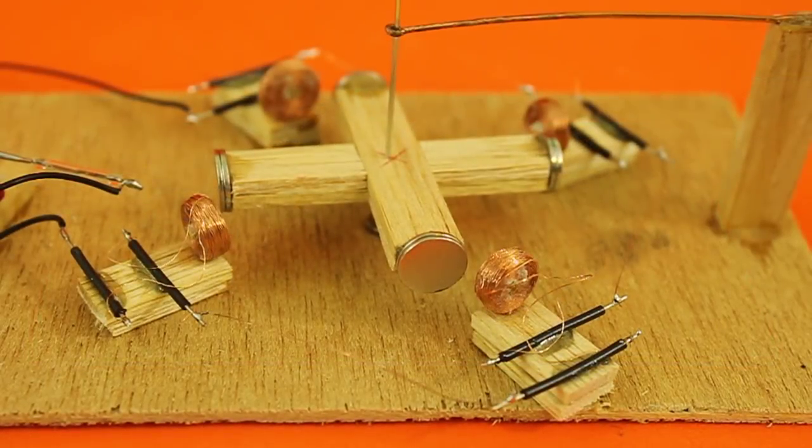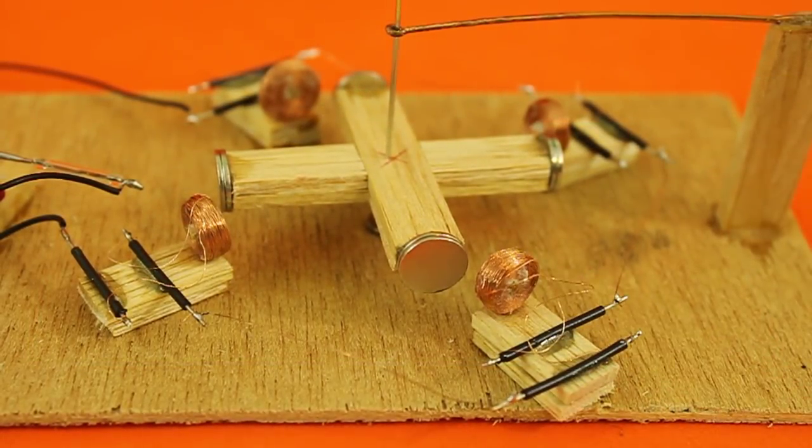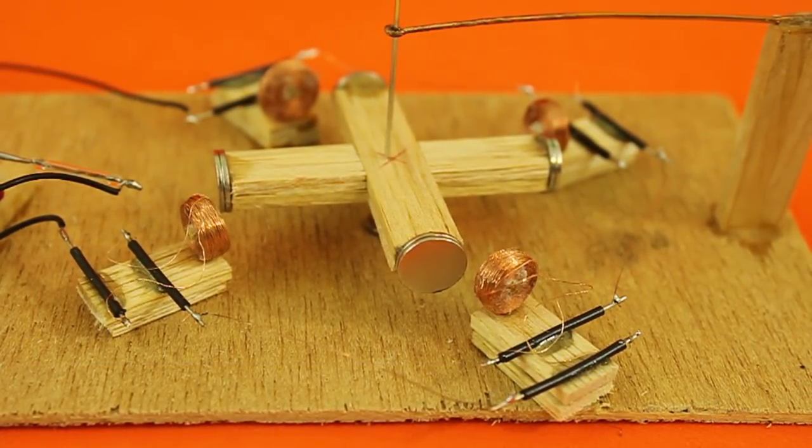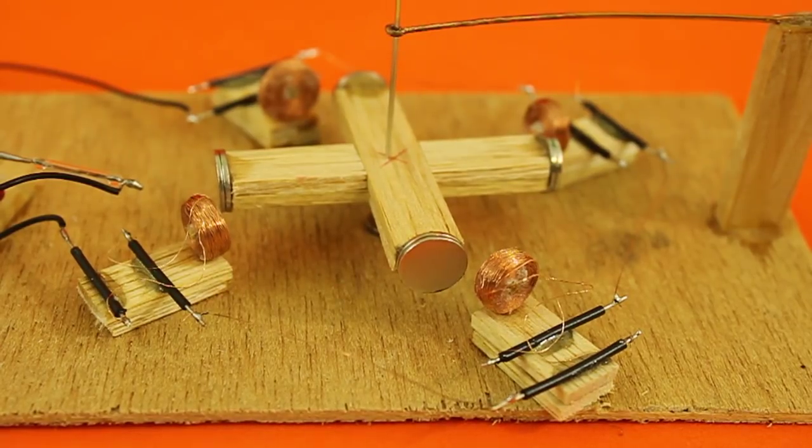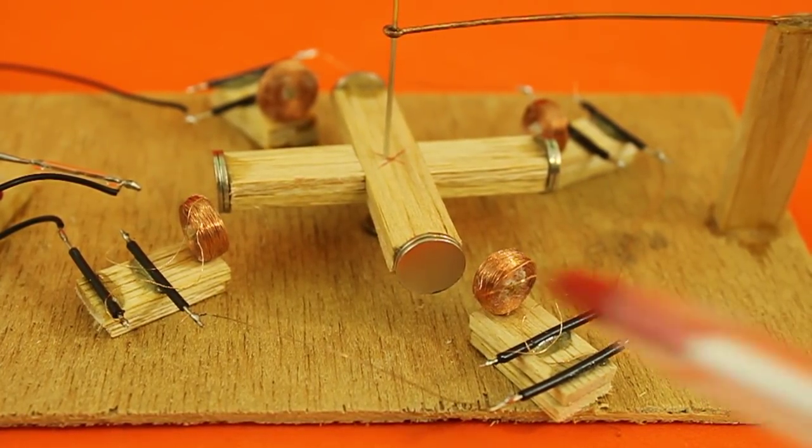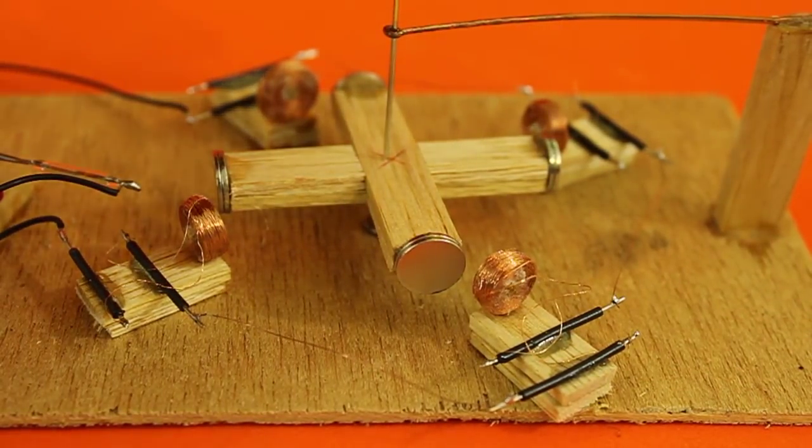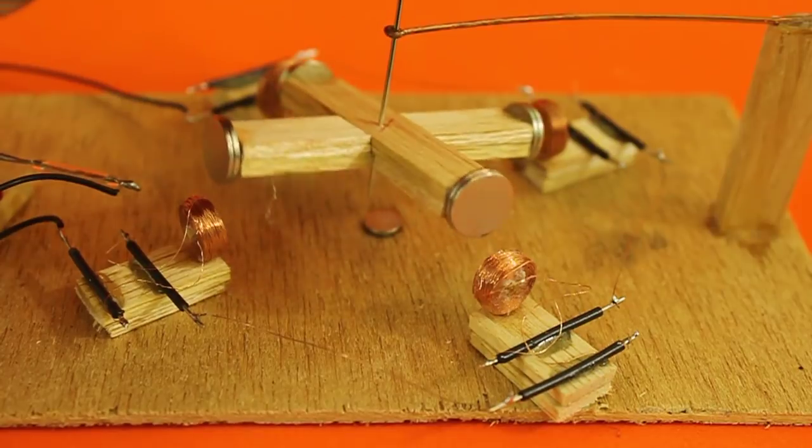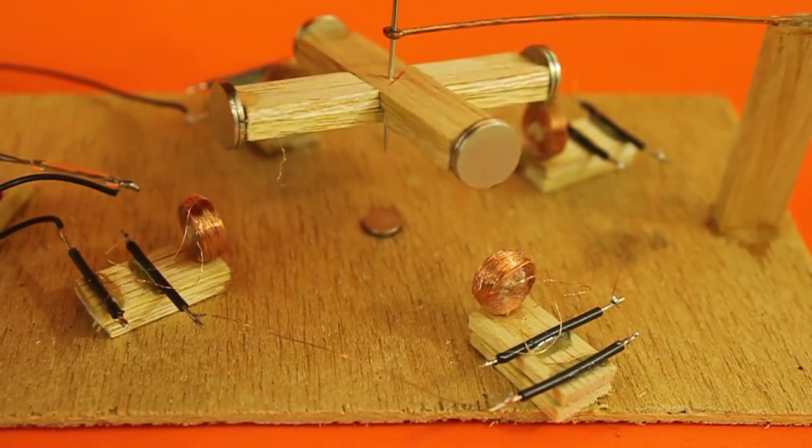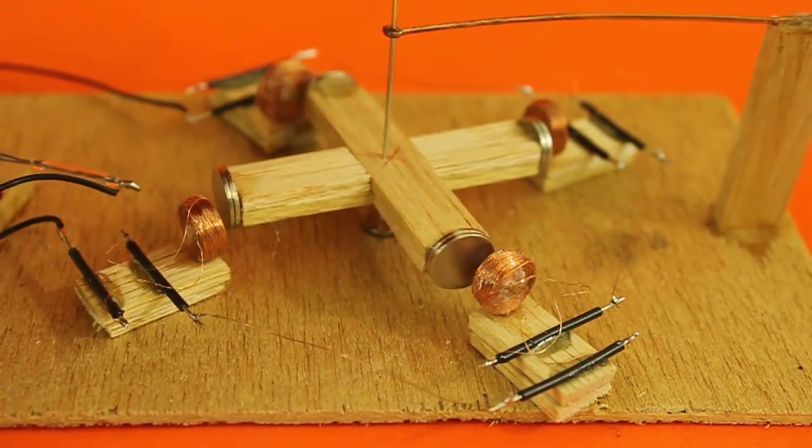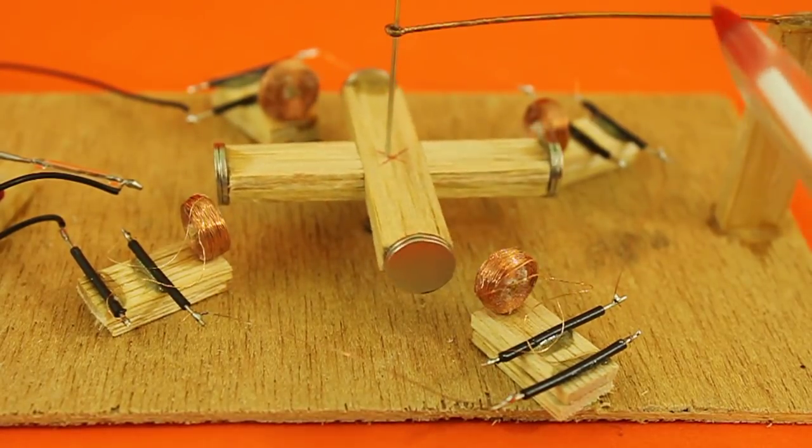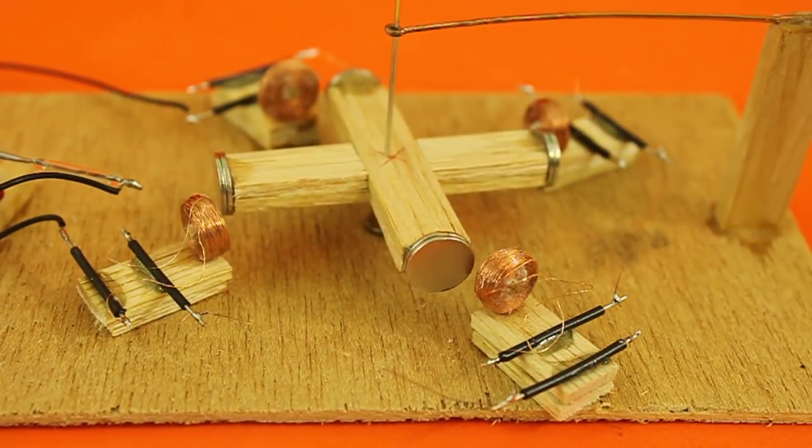The coils are handmade. Each one has 1000 turns of very fine wire, gauge 42 AWG, and they are connected in series. The axle of the rotor is a needle that rests on a small magnet. And here we have a copper wire.